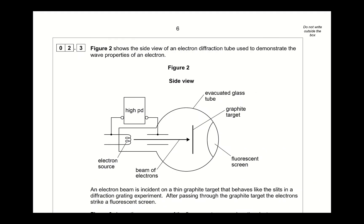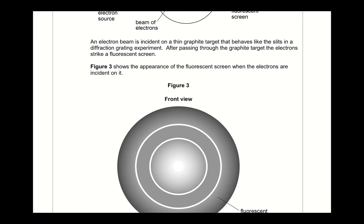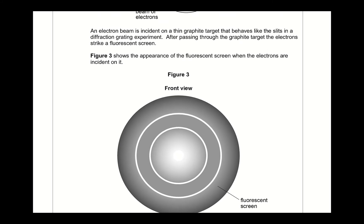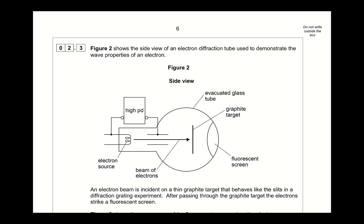So we have a side view of an electron diffraction tube used to demonstrate the wave properties of an electron. We've got a fluorescent screen. We've got a graphite target. Use graphite target because it is very well known the spacing of the electrons, or sorry, of the carbon atoms in graphite, it's very consistent.